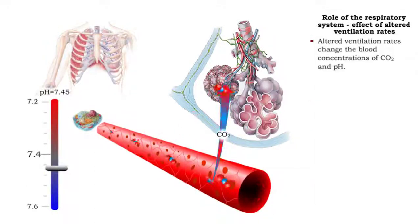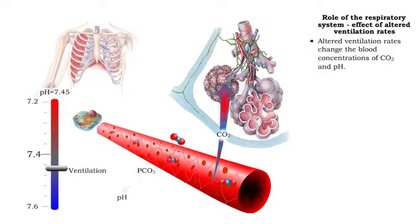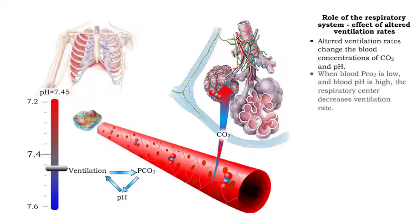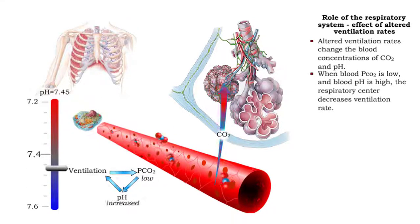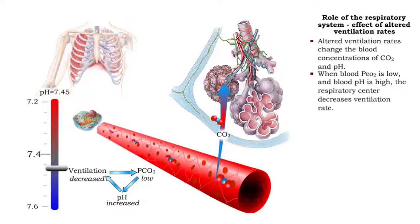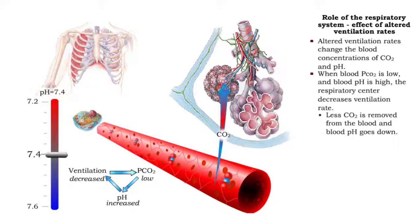Altered ventilation rates change the blood concentrations of carbon dioxide, as well as pH. When blood carbon dioxide level is low and blood pH is high, the respiratory center decreases ventilation rate. Less carbon dioxide is removed from the blood, and blood pH goes down.